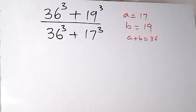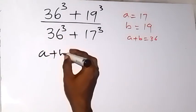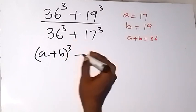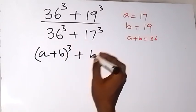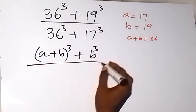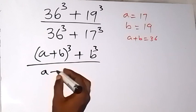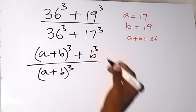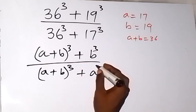Since 17 plus 19 gives us 36, when we replace what we have, we can write 36 as a plus b. So the expression becomes: (a plus b) raised to power 3, plus b raised to power 3, all over 36 — which is also (a plus b) raised to power 3, plus a raised to power 3.